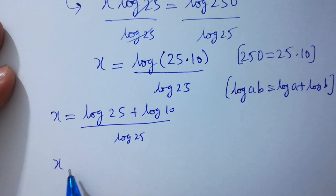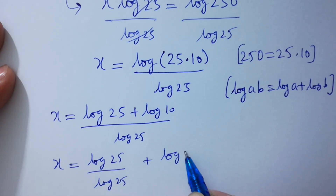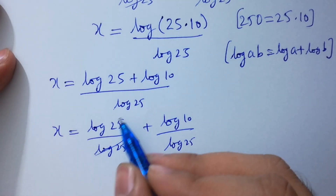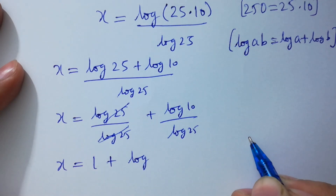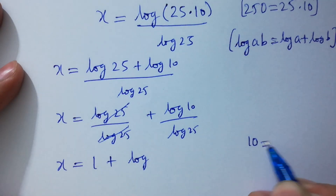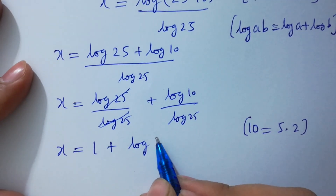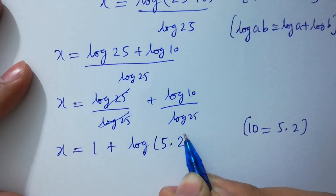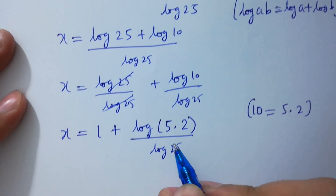So x equals log 25 over log 25 plus log 10 over log 25. Log 25 and log 25 will be cancelled, giving x equals 1 plus log 10 over log 25. Now 10 equals 5 times 2, so log 10 becomes log of 5 times 2, over log 25.